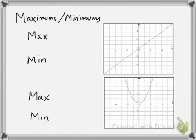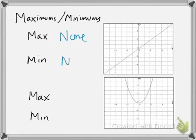You'll also be asked to find the minimums and maximums of each function. In the case of the linear function, it has no maximum and it also has no minimum. This is because it continues to go on forever in the positive direction, and also infinitely in the negative direction. Thus, it doesn't have a clear max or min.